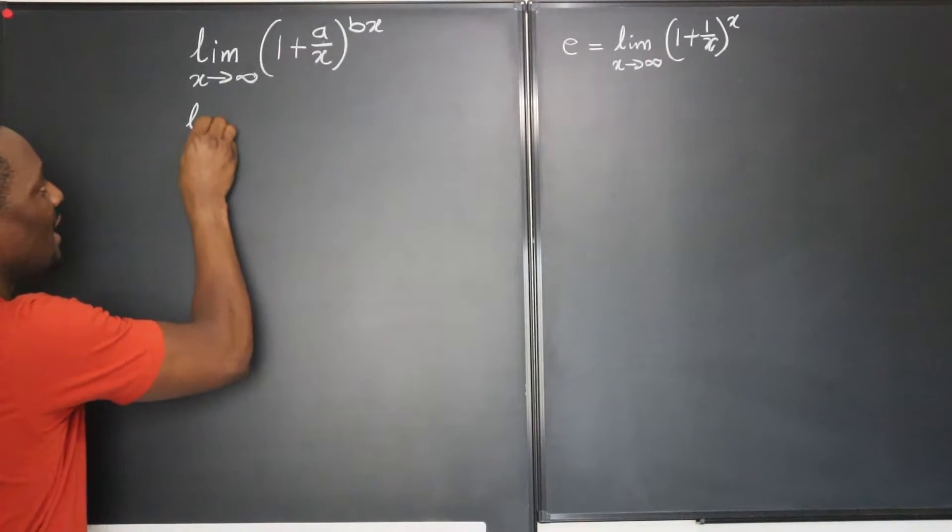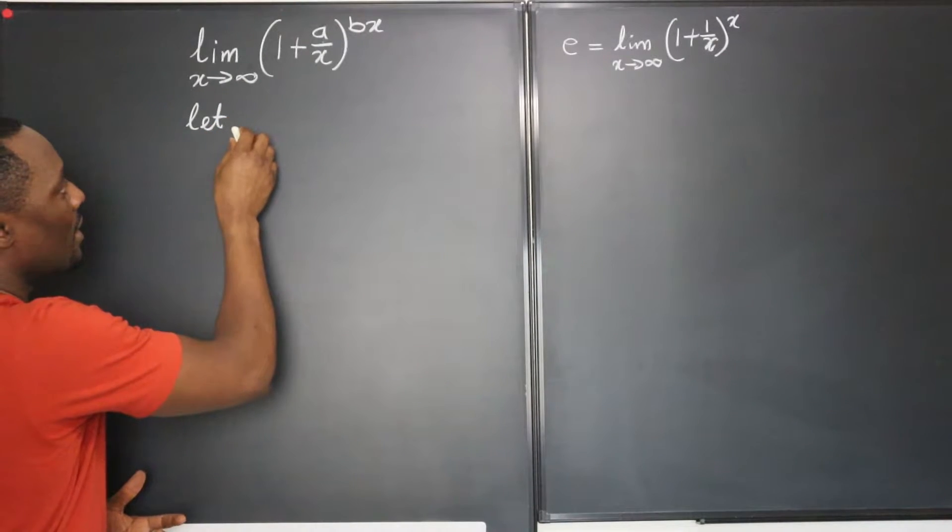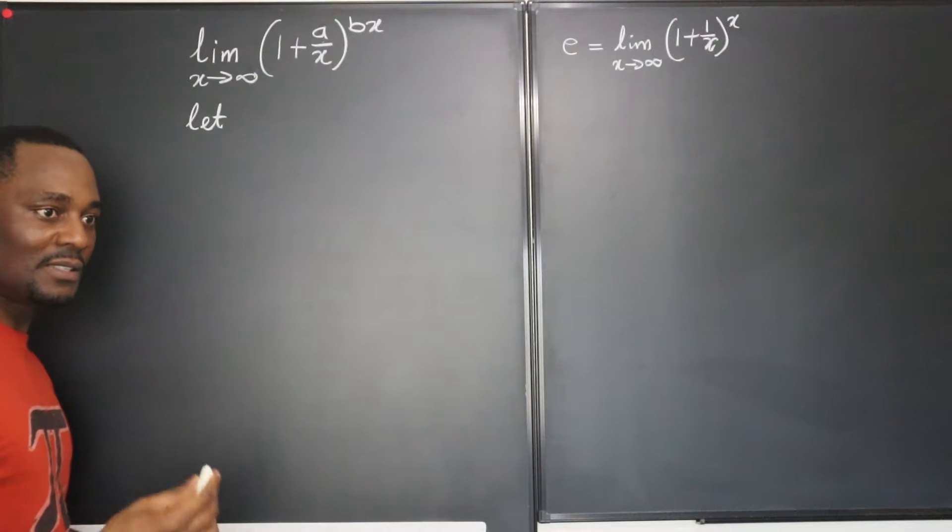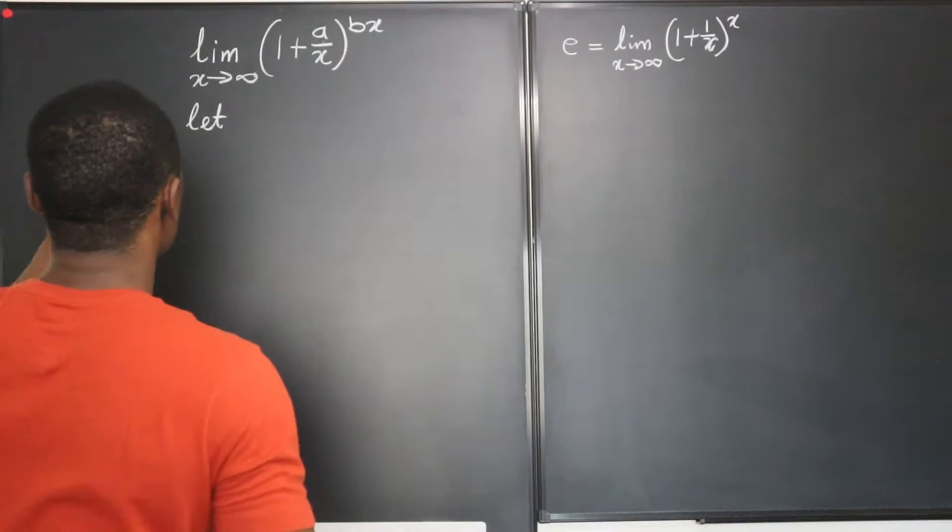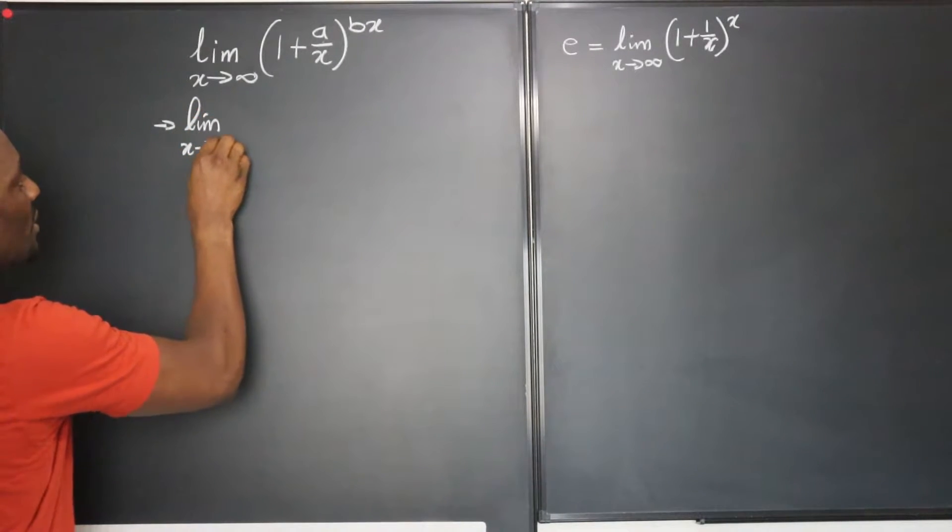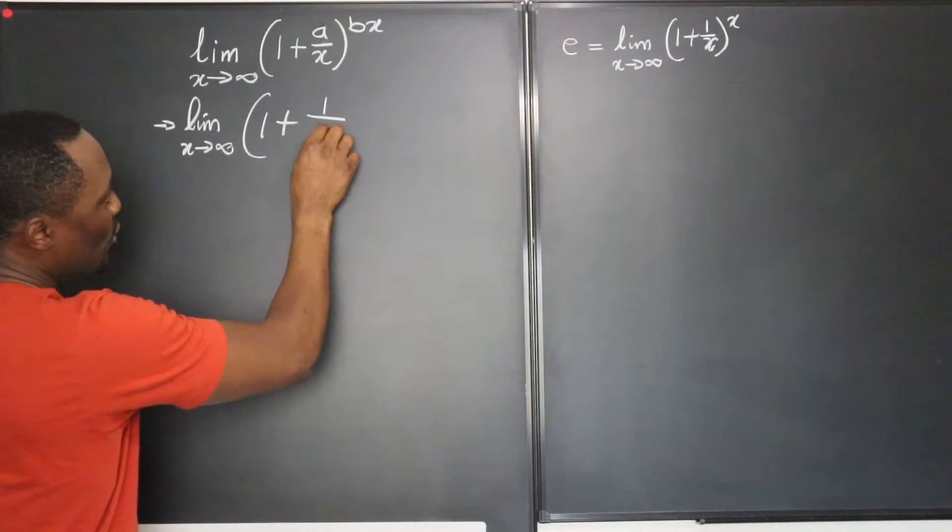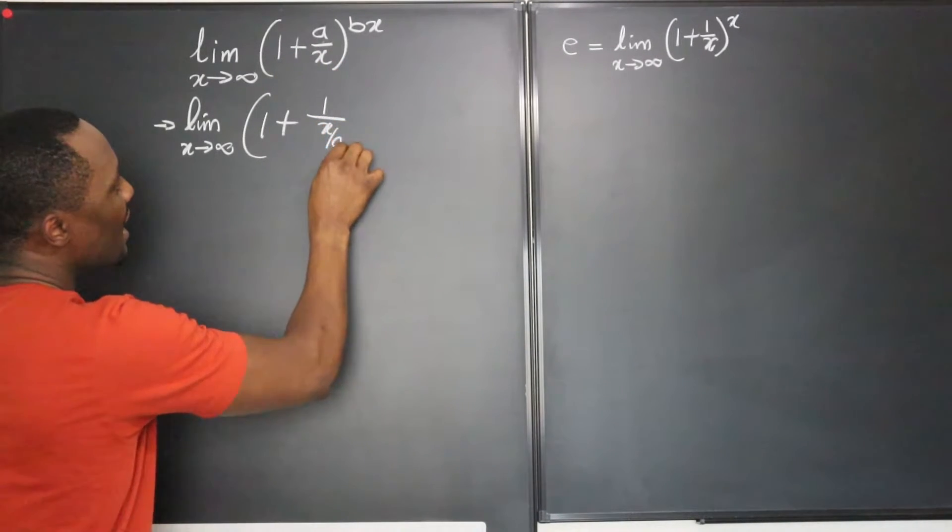Let's just rewrite this. I think it's better to rewrite this and say that this is the same thing as the limit as x approaches infinity of 1 plus 1 over the reciprocal of this, which will be x over a.